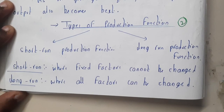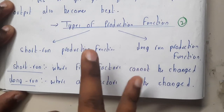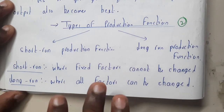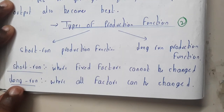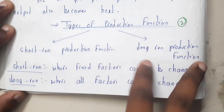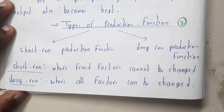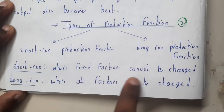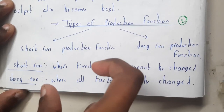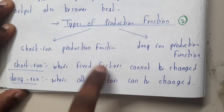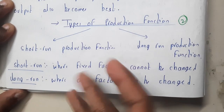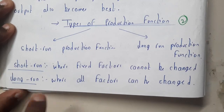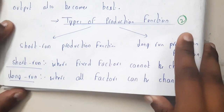We have two types of production functions: short run and long run. In the short run, most factors are fixed. In the long run, there can be many changes in the company. Short run is where fixed factors cannot be changed — small things like labor salaries may change. In the long run, all factors can be changed according to requirement or kept constant.